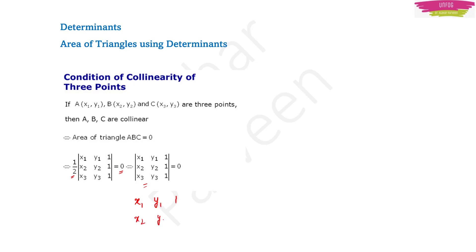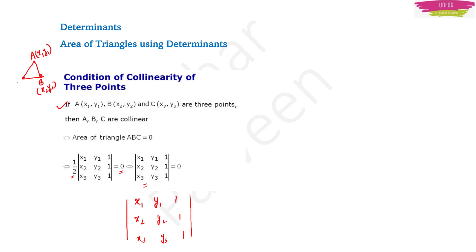So the condition for collinearity becomes the determinant with rows x1 y1 1, x2 y2 1, and x3 y3 1 equal to zero, where x1 y1, x2 y2, x3 y3 are the three points — say A, B, C — with which the triangle is formed.